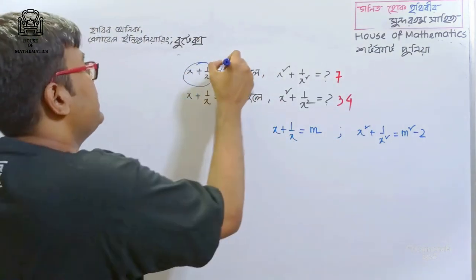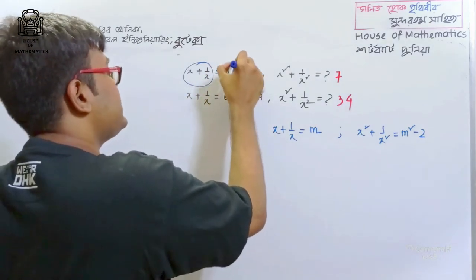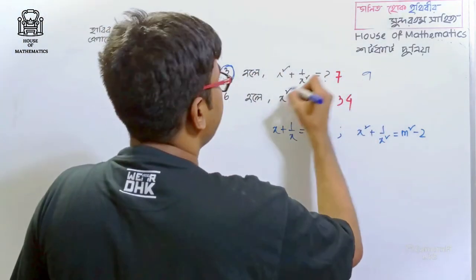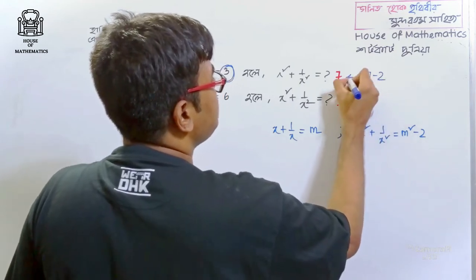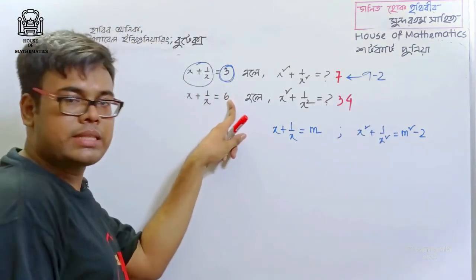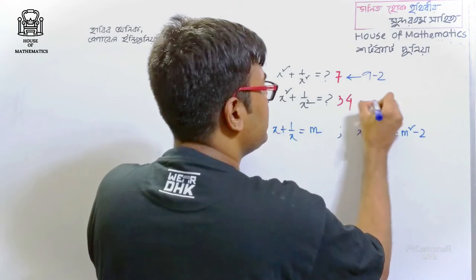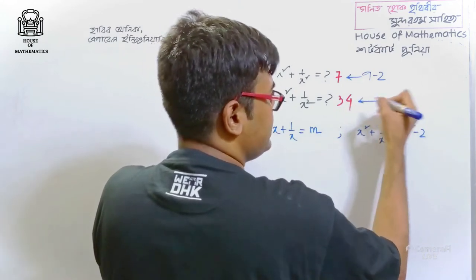The answer is 3, so the answer is 9. 9 minus 2 is 7, so the answer is 7. The answer is 6, so the answer is 36. 36 minus 2 is 34, so the answer is 6.